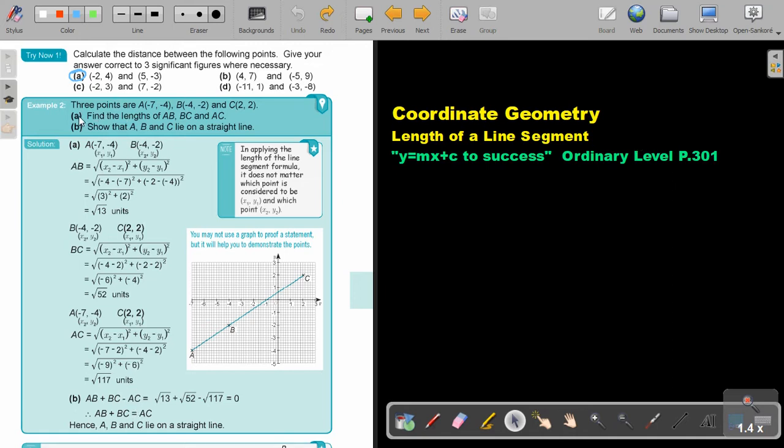Let's look at another example. Three points are point A, B and C. Find the lengths of AB, BC and AC. So basically I just write the two points.